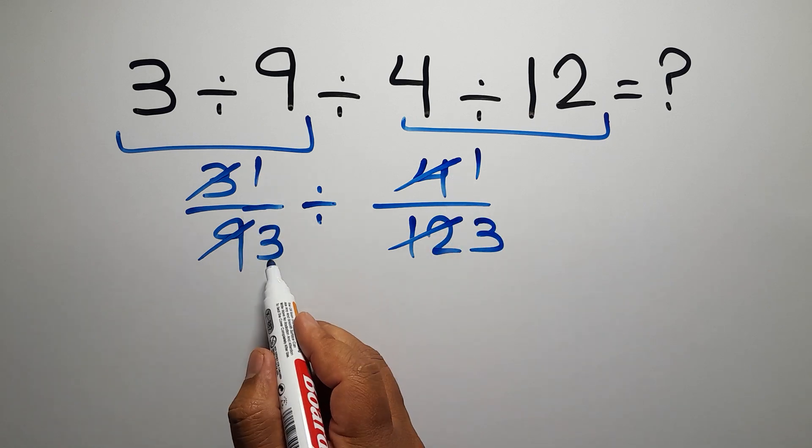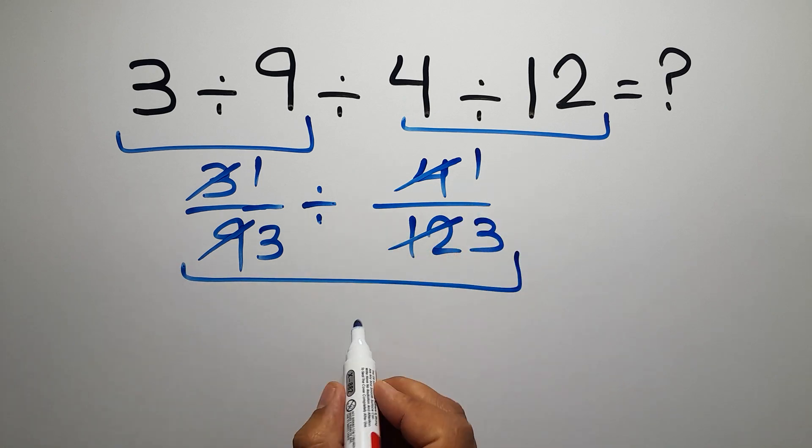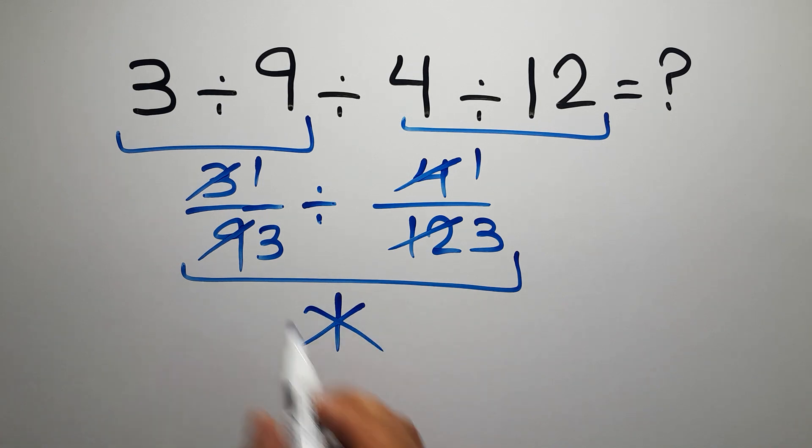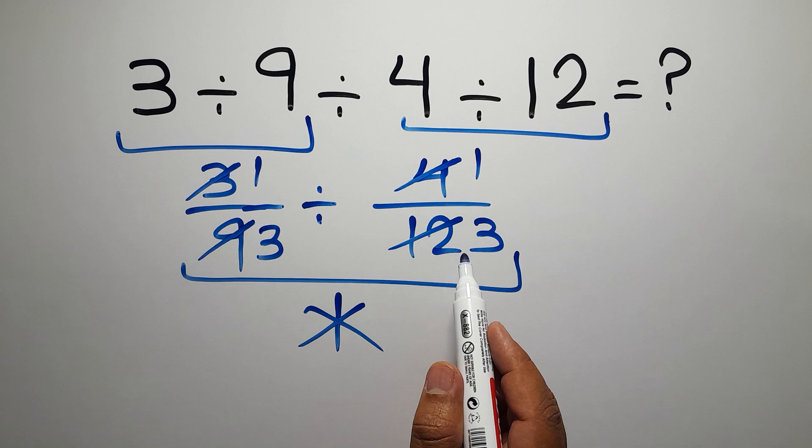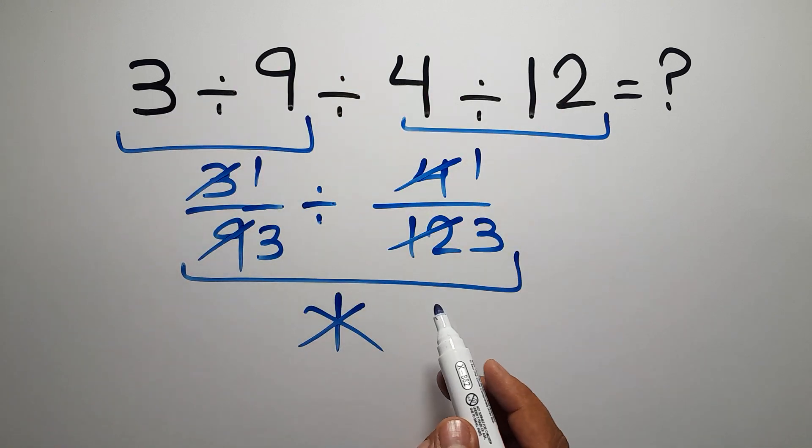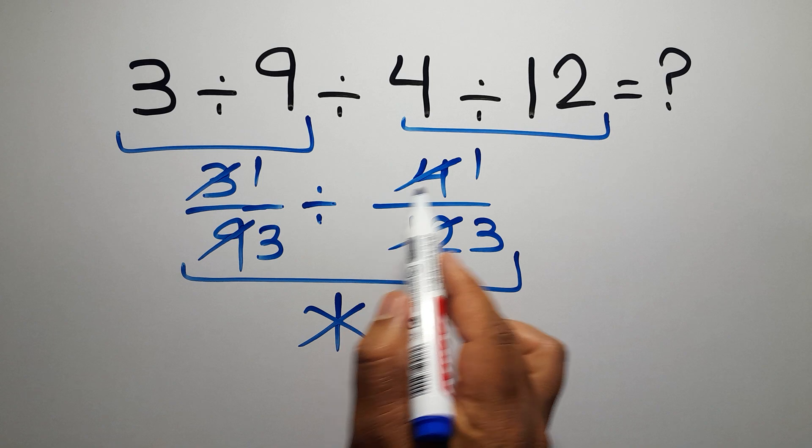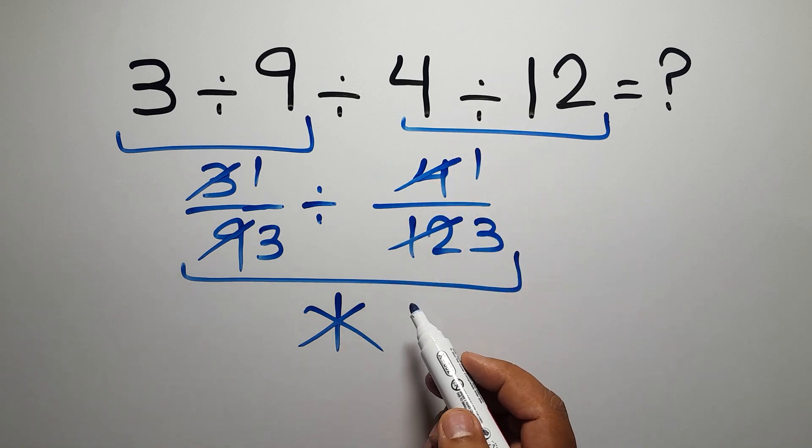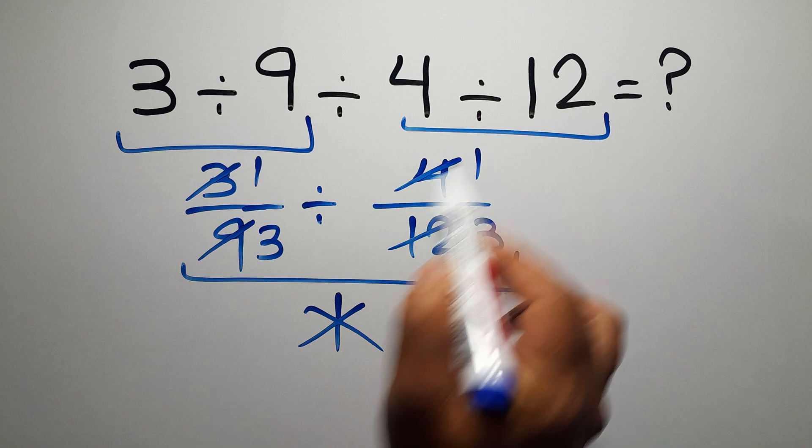So we have 1 over 3 divided by 1 over 3, which equals just 1. But this answer is not correct because when we have more than one division in an expression, we have to work from left to right. First this division, then this division, and finally this division.